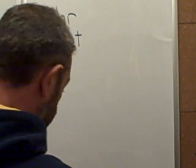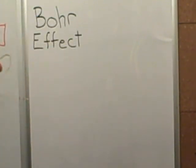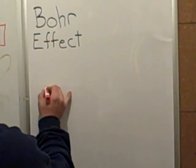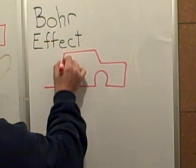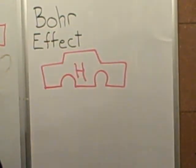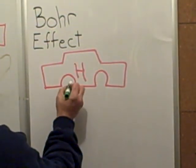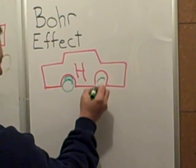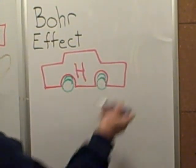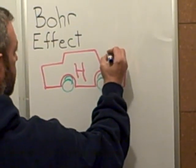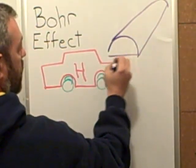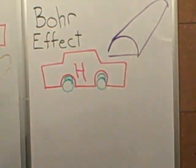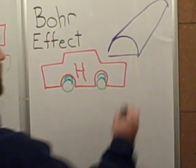This video is about the Bohr Effect, which has to do with the affinity of oxygen to hemoglobin. An easy way to think about this is to imagine a hemoglobin car with four oxygen tires. The car goes into an acid tunnel and the tires fall off. That's the basic concept.